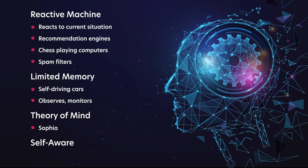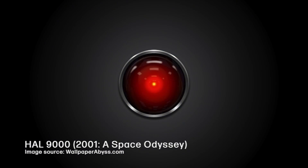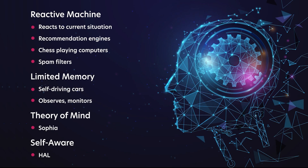The final category is self-aware AI, which refers to truly sentient systems. While the HAL 9000 from science fiction is a well-known example, such AI remains in the realm of future possibilities. One way to describe AI in this column is based on how it uses data from memory or its level of awareness.